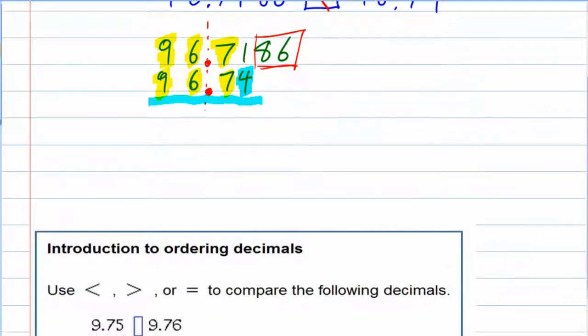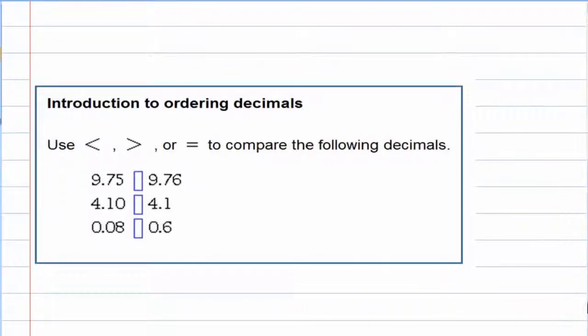So looking at our examples here, and we have a few. Again, each one of these, in order to make the comparison, I want to line them up. The first one here, 9.75, 9.76.